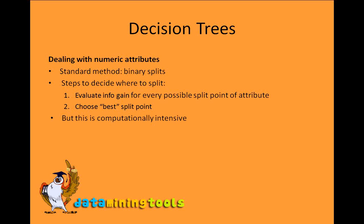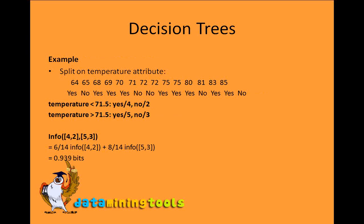This step is computationally intensive. To show an example, we have the temperature attribute from our weather data arranged in increasing order with the class written for each data point. We divide it into two halves for temperature less than 7.5 and greater than 7.5, calculate the information for this division — it comes out to be 0.939 — and we consider all possible divisions, choosing the one with the best gain.